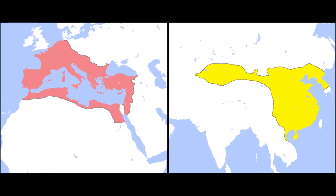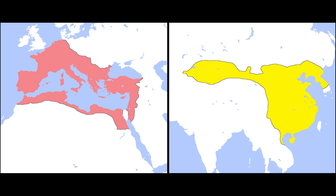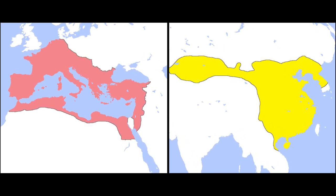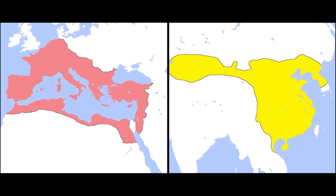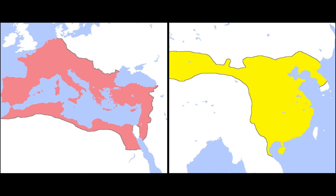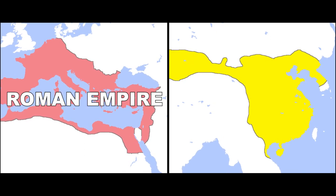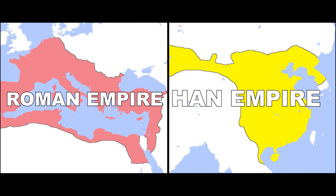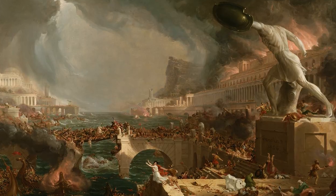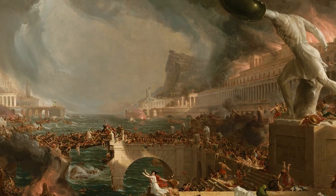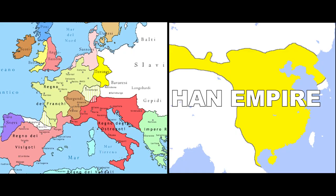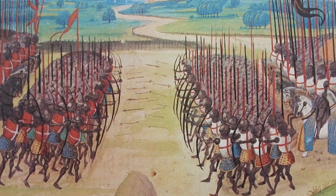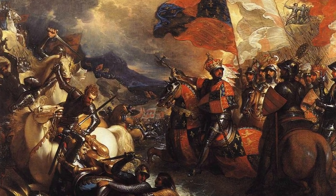If you look at a map of Europe and East Asia 2000 years ago, you see that both areas are partially unified by large empires, the Roman Empire and the Chinese Han Empire. After the end of the Western Roman Empire, Europe fell apart into smaller states, which were usually at war with each other.